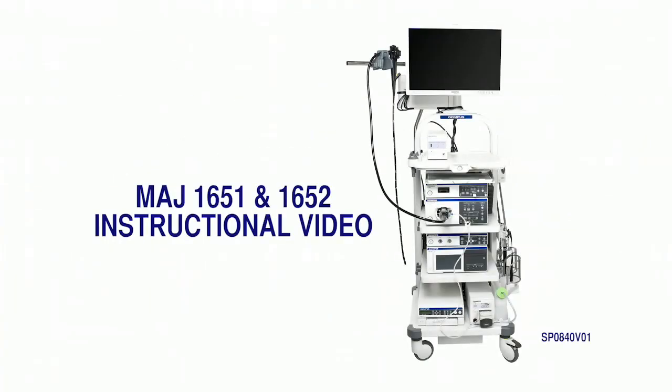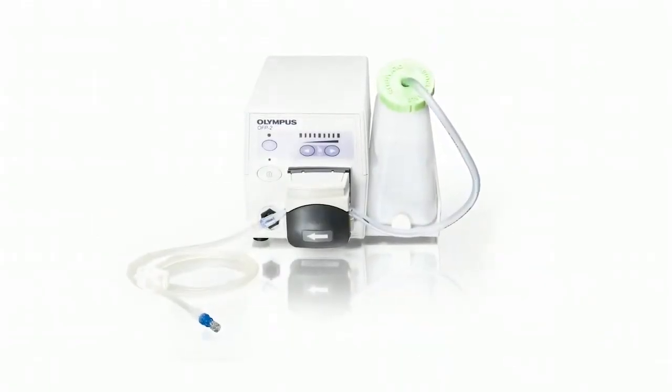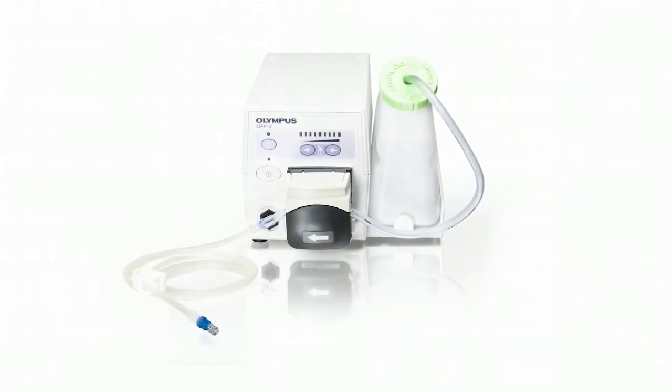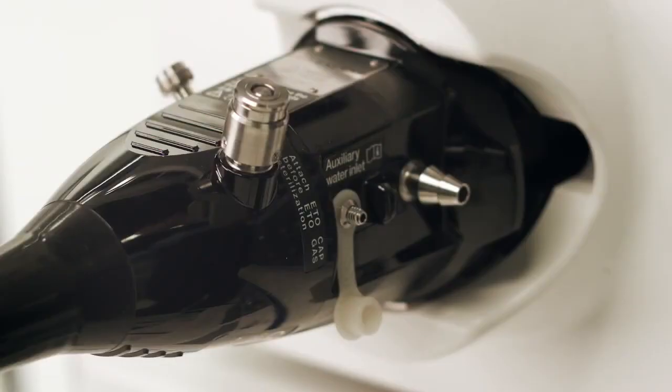Welcome. This instructional film will cover how to use the Olympus MAJ 1651 and MAJ 1652 disposable auxiliary channel water tube set and adapter, which have been specially designed for use with your Olympus OFP or OFP2 endoscopic flushing pump and your Olympus endoscopes that include an auxiliary channel water connection.